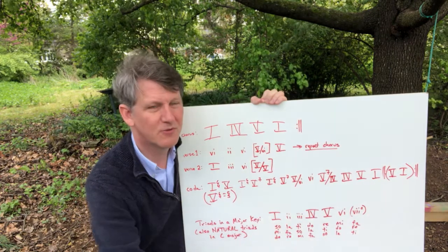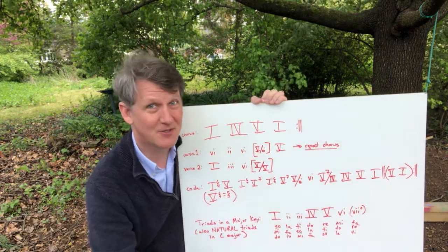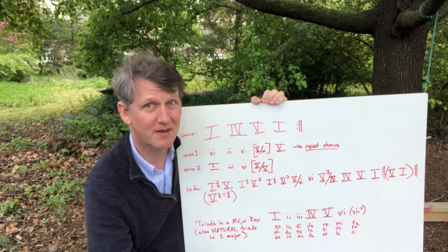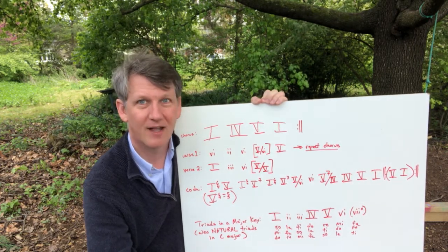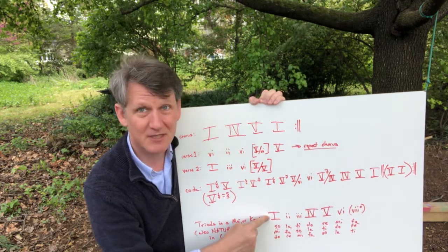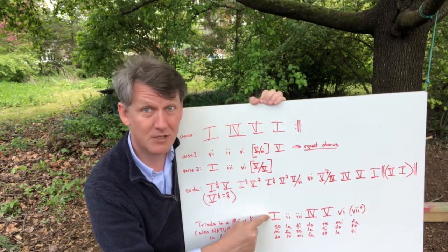This is also true of all major scales, so it's also true of C major, which will help you remember what the natural triads are, the triads that don't have accidentals. So, C major, C is going to be a major triad.